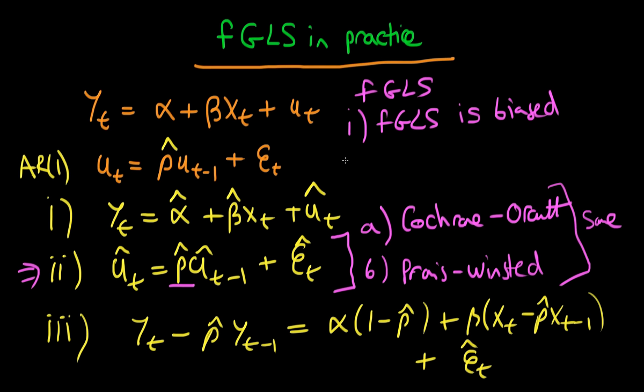But a good thing is that if we assume that we have strict exogeneity of errors, which means that the expectation of our sort of error term given Xt, and in this case where AR1 errors Xt minus 1 and Xt plus 1, we know that that has to be equal to zero. And well if we assume that that's equal to zero rather, it turns out that FGLS is consistent.